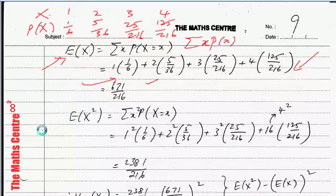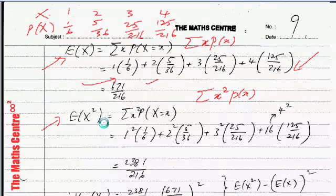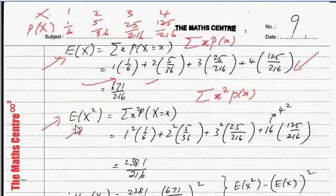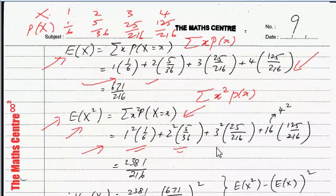Then we have to find the expected value of X squared. The formula is the sum of X squared times P(X) — take each X value, square it, multiply by its associated probability, and add them up. So: one squared times one over six, plus two squared times five over thirty-six, plus three squared times twenty-five over two-sixteen, plus four squared times 125 over 216. Use a calculator and you get the expected value of X squared as 2381 over 216.